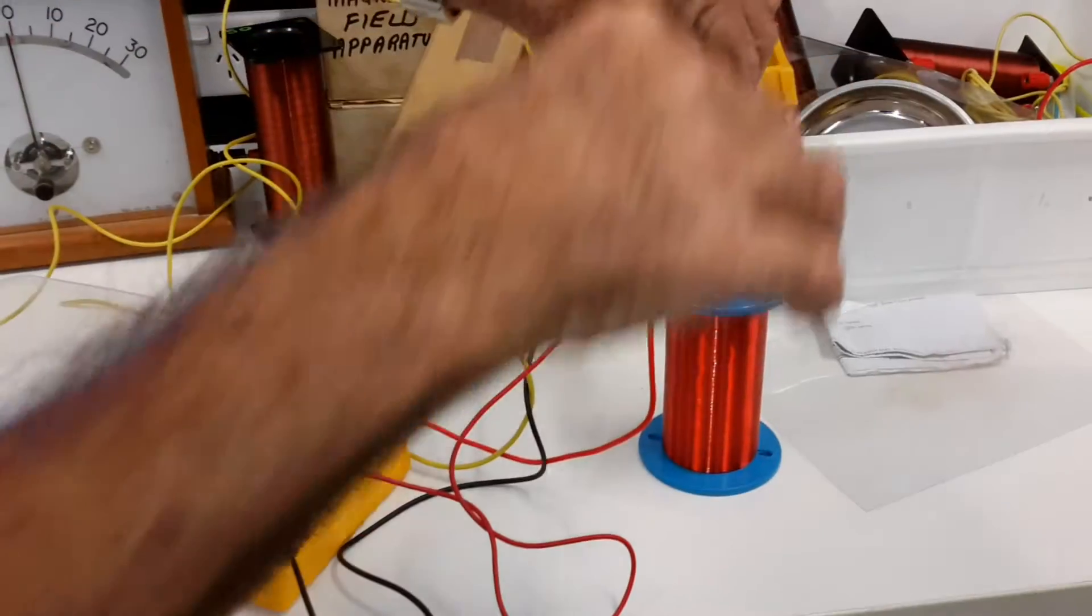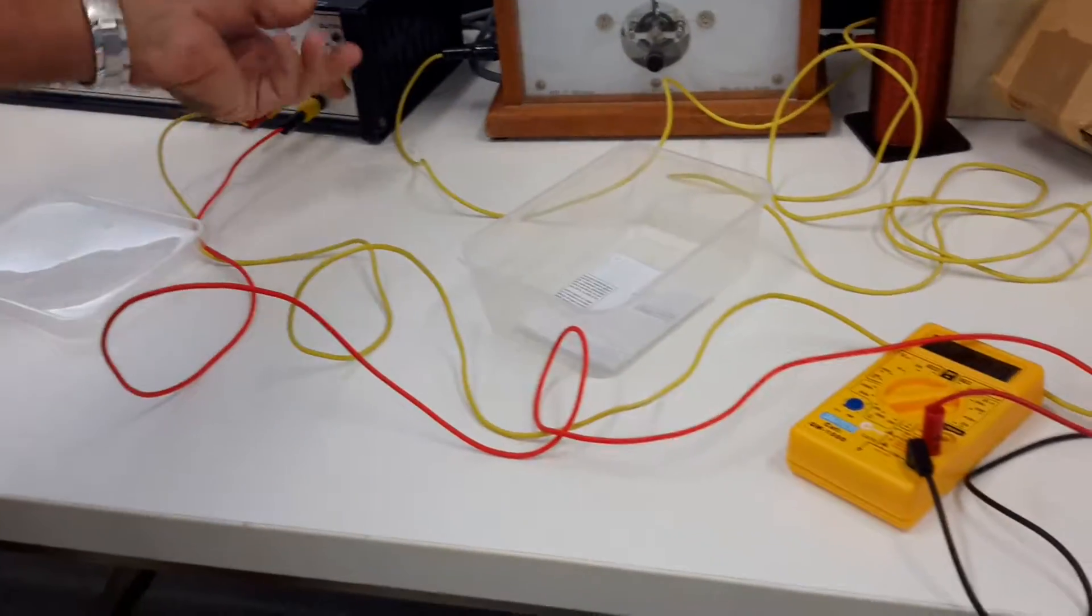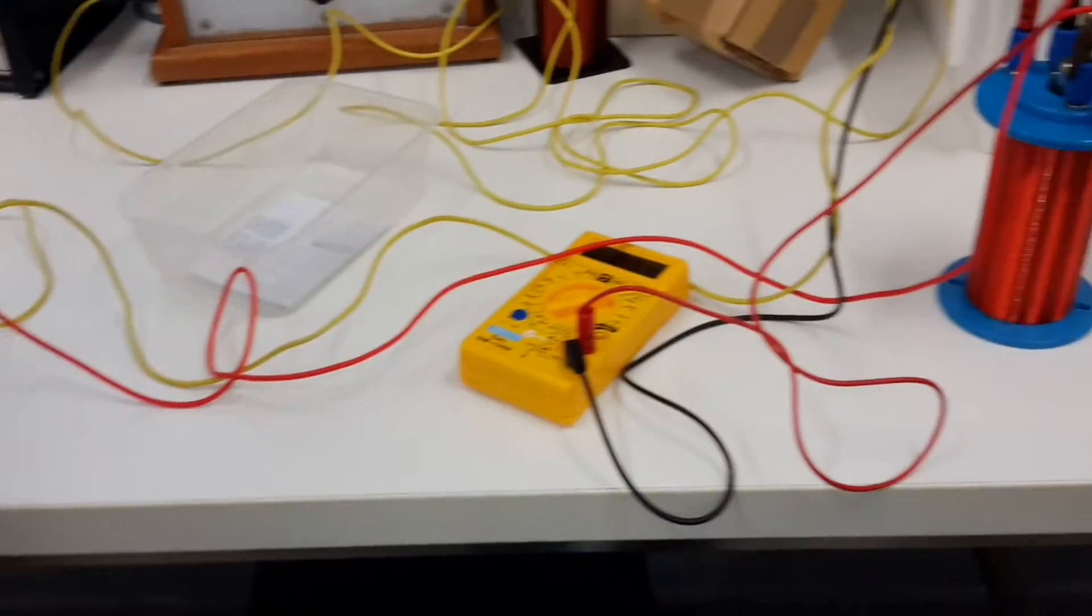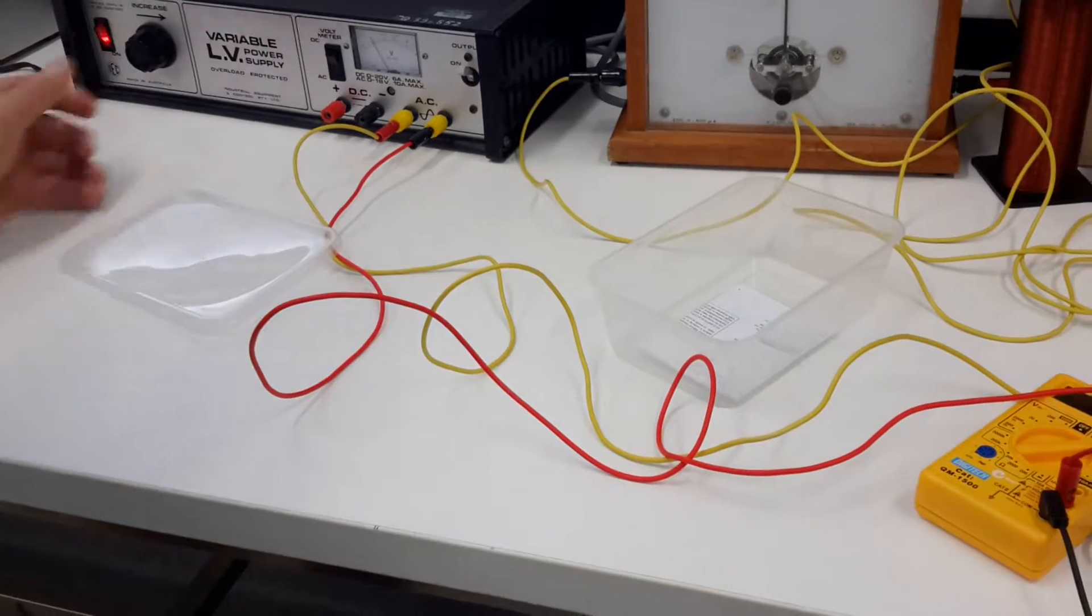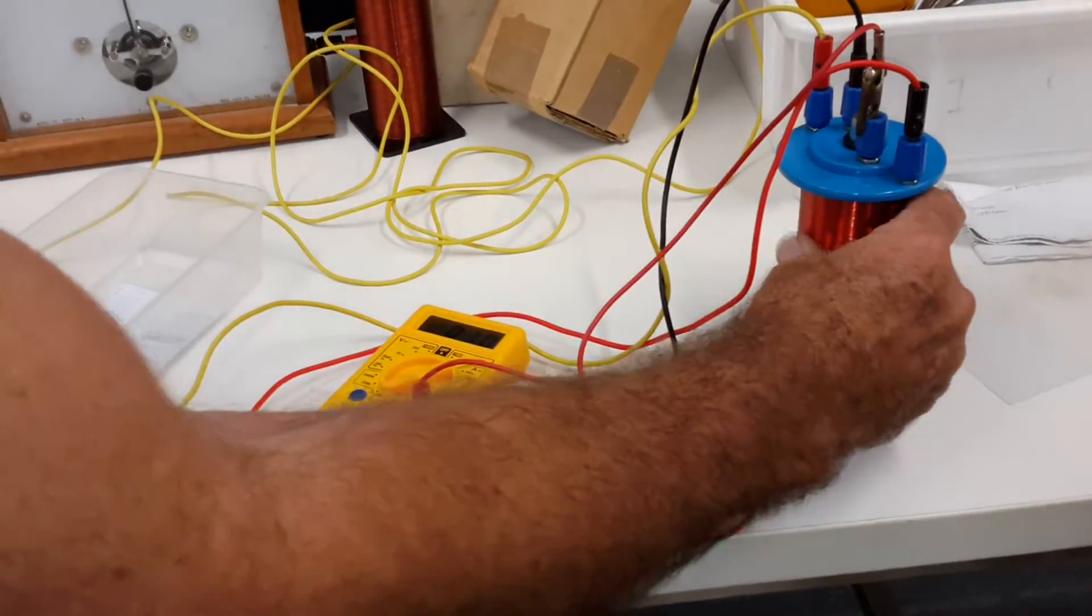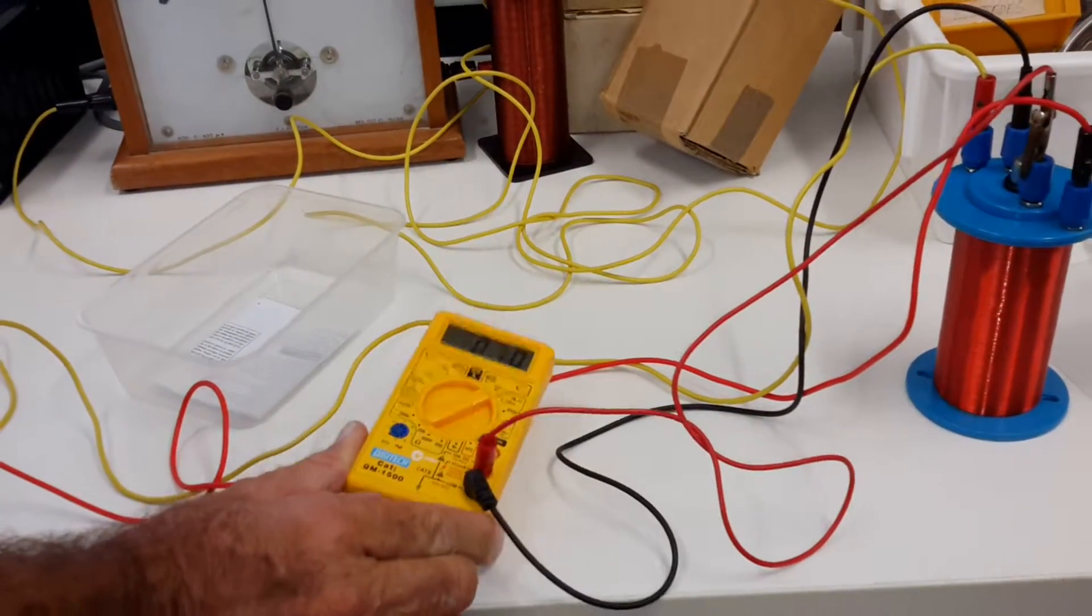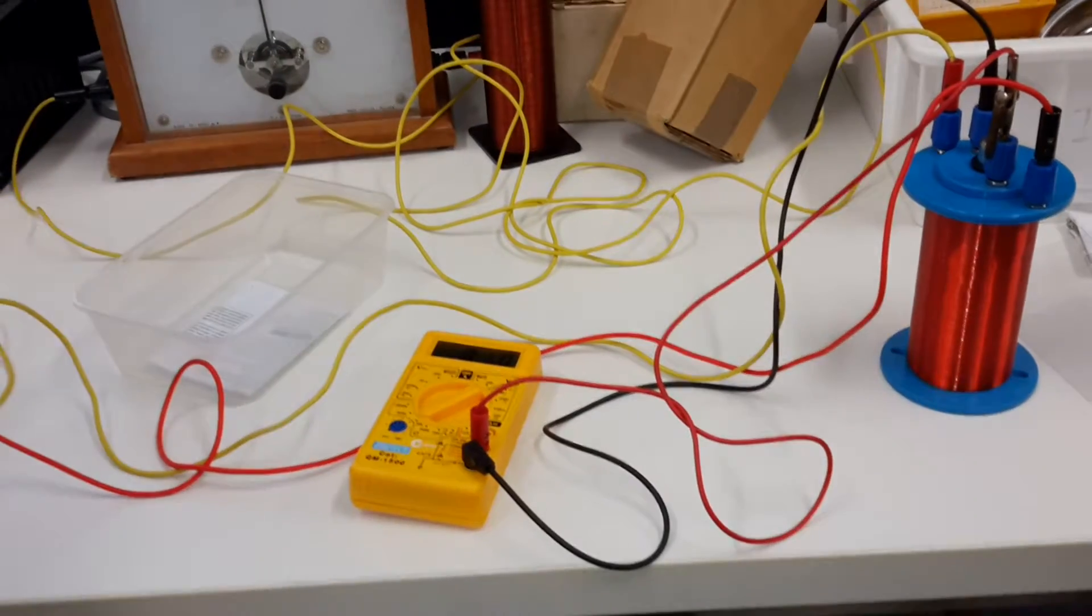Connect it up. So now I've got 5 volts in the primary coil and only 1 volt in the secondary coil. So that would be called a step-down transformer.